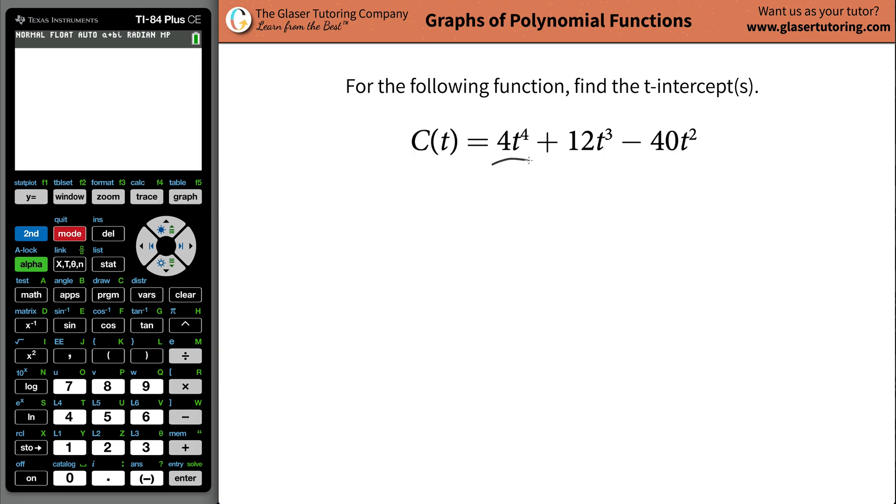So the function we're given here is C(t) equals 4t raised to the fourth plus 12t raised to the third minus 40t squared.